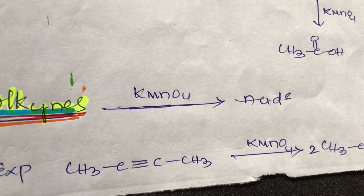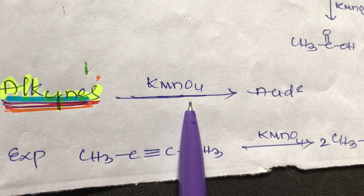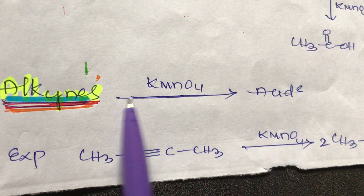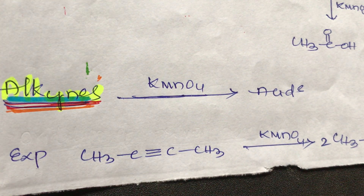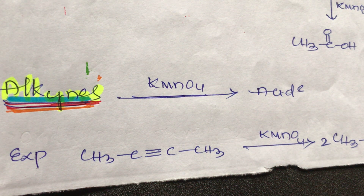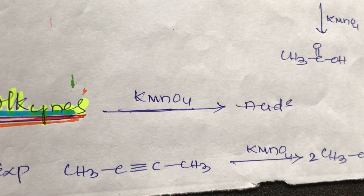Alkynes are also oxidized with potassium permanganate or K2Cr2O7 to give acids. These are the strong oxidizing agents.